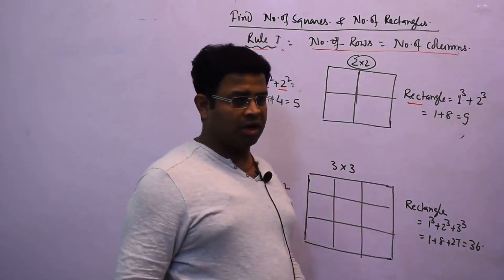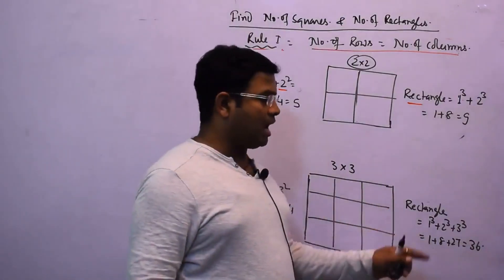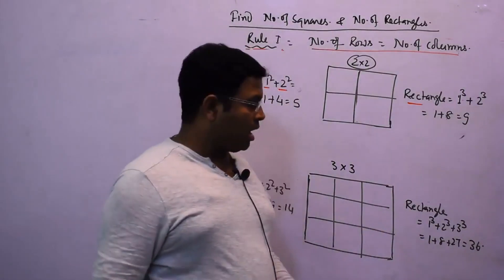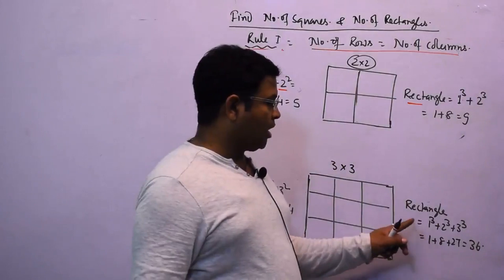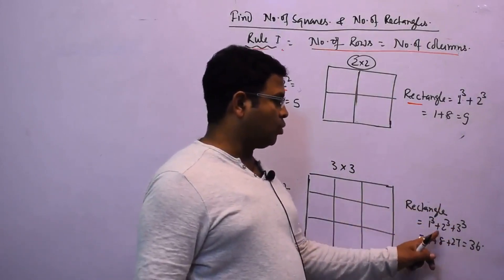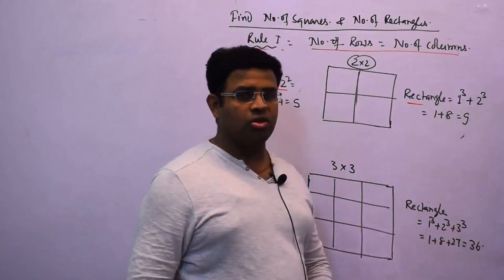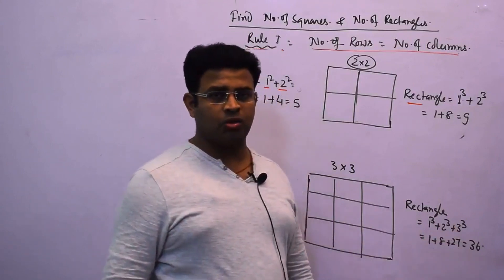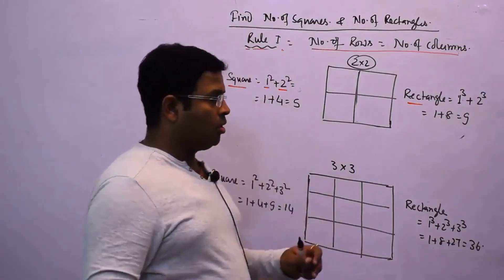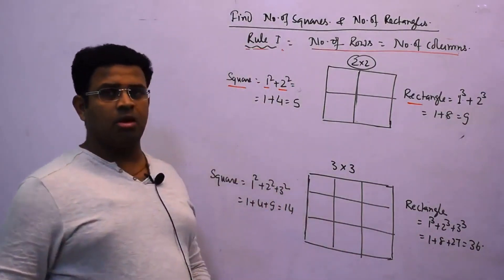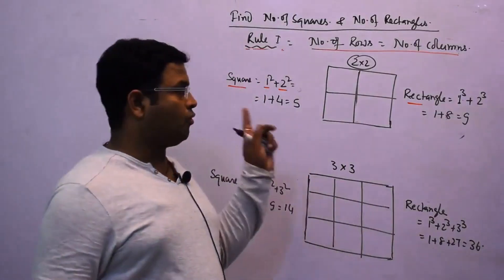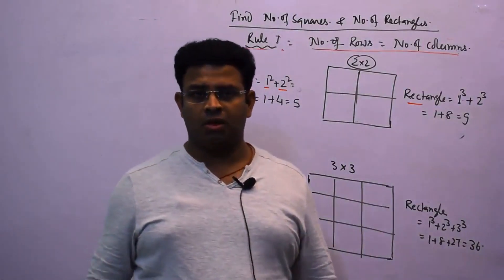For three rows and three columns, the number of rectangles: 1³ + 2³ + 3³ = 1 + 8 + 27 = 36 rectangles. This way we can easily find the number of squares and the number of rectangles when the number of rows and columns are equal.